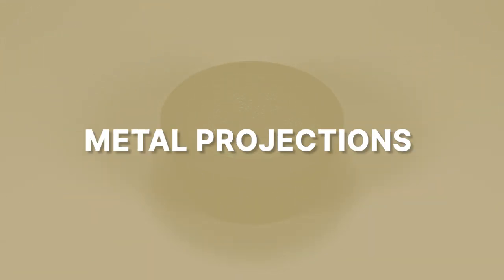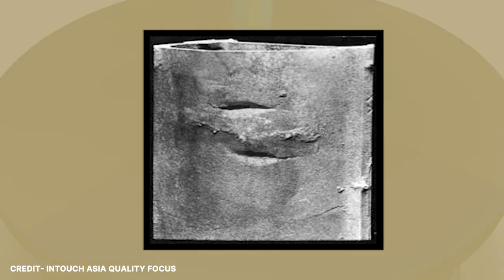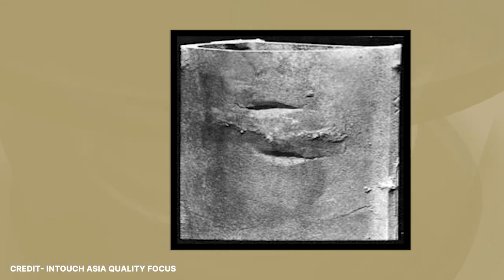The first category is metal projections, denoted by the letter A. This category of defects consists of unwanted projections such as swells and rough surfaces.